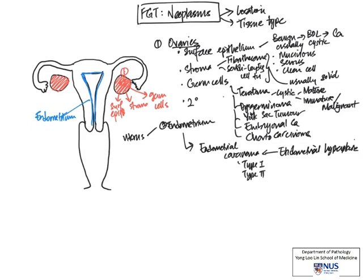There are two main types of endometrial carcinomas, type 1 and type 2, with different risk factors, different epidemiology, and different histology and prognosis as well. Usually endometrial hyperplasia precedes type 1 endometrial carcinoma.